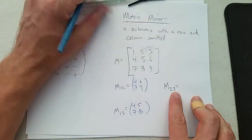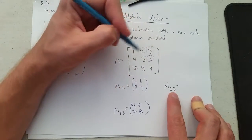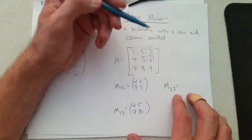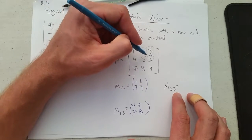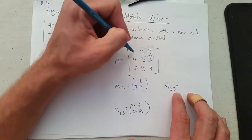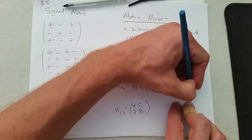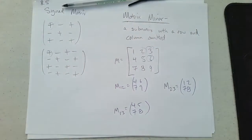And last, we'll do M2,3, so that will be right there at row 2, column 3. I just picked these randomly—I could have done any of the 9 spots. You remove row 2 and column 3, and we have 1, 2, 7, 8. That's all there is to finding minors.